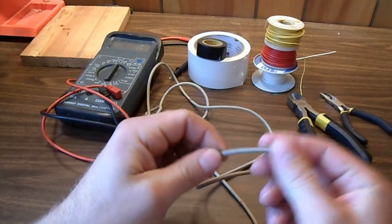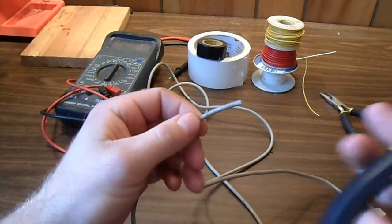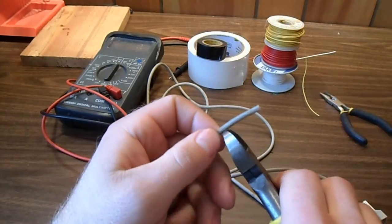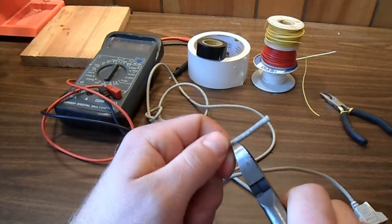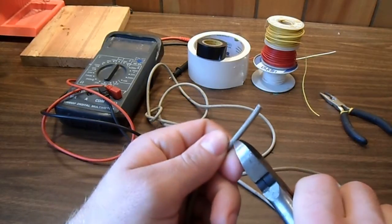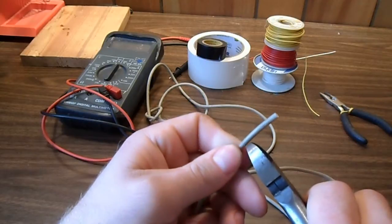Now we need to strip the cable so we can see the wires inside. About an inch and a half, just to give us something to work with. Be careful not to damage the wires inside.